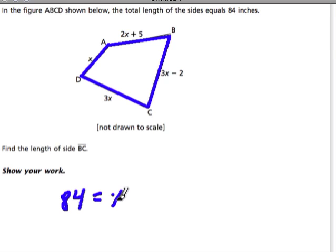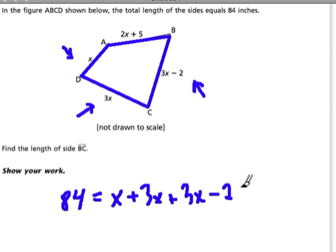So x is one of the sides, right here. 3x is another. 3x minus 2 is another. So adding 3x minus 2. And then we're adding our last side, 2x plus 5.